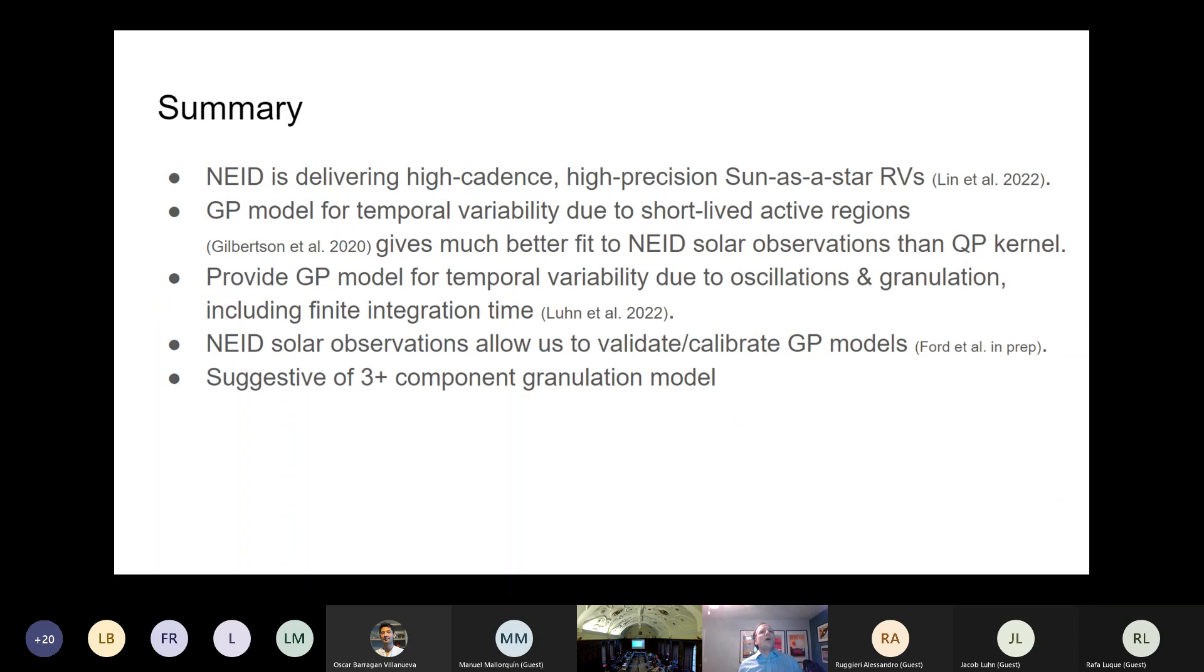So a summary of what we've done so far. NEID is giving high cadence, high precision sun as a star observations. Andrea Lin has a nice paper summarizing the current state of that. There's a GP model now that accounts for the temporal variability due to short-lived active regions, and that gives a much better fit to NEID solar observations than trying the quasi-periodic kernel. We also provide GP models for temporal variability due to oscillations and granulation, including finite integration times, and we're in the process of validating and calibrating those GP models based on NEID solar data. I think it's still preliminary, so at the moment I'll say it's suggestive that a three-component granulation model may be more appropriate for the sun, and hopefully in the coming months we'll turn that into something more concrete and quantitative.